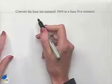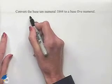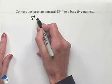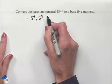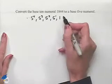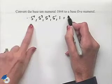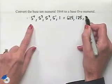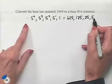We'll begin by writing down those powers of 5 that we can work with. We have 5 to the 4th, 5 cubed, 5 squared, 5 to the 1st, and 1. That's equal to 625, 125, 25, 5, and 1.